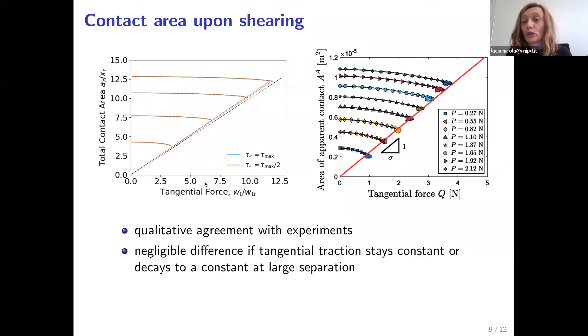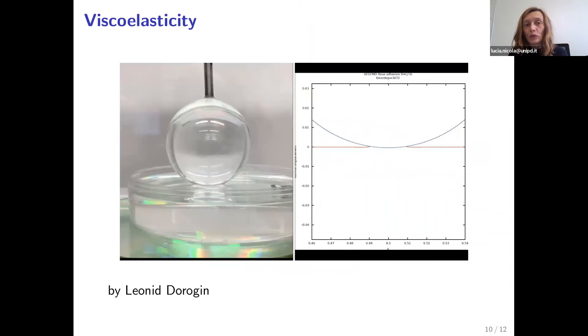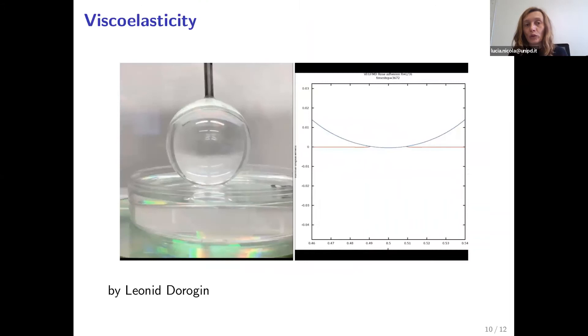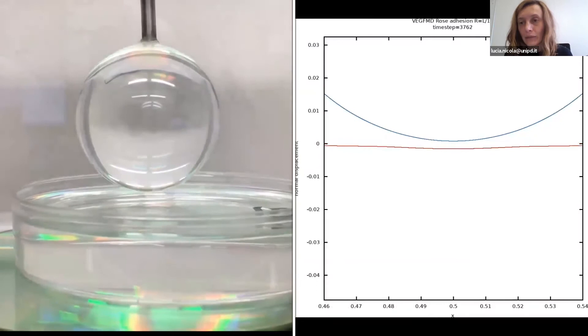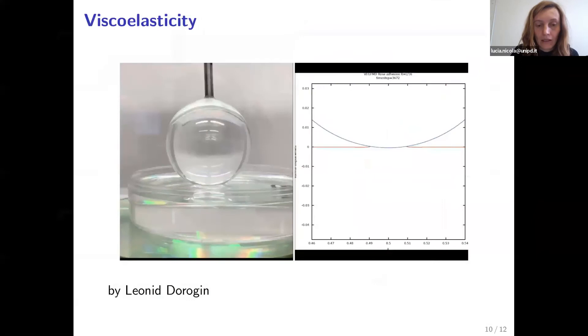Now, so far, I've just shown you results for bodies that deform elastically. We would like also to account for viscoelasticity and therefore I'm showing you some preliminary results on this. So on the left hand side, you see an experiment where we have a glass ball that is retracted from the viscoelastic body. This is a pretty soft PDMS. And on the right hand side, you see the simulation.